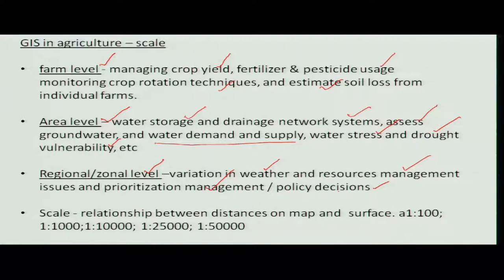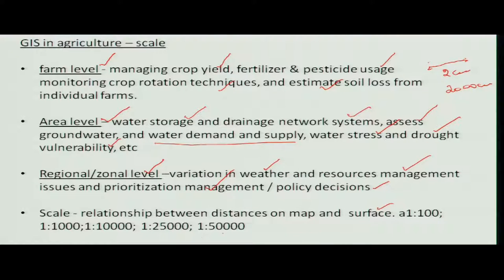Scale is the relationship between distances on the map and distances on the surface. Suppose you see two points on the map that are about 2 centimeters apart. If the scale is 1:1000, that means it is 2000 centimeters on the ground. If the scale is 1:50,000, then it becomes 1 kilometer. So when you measure it accurately on the map, the distance on the ground will be proportionally larger.